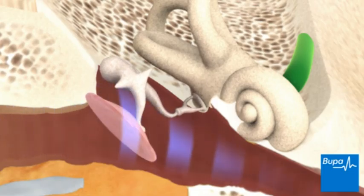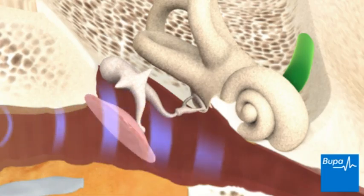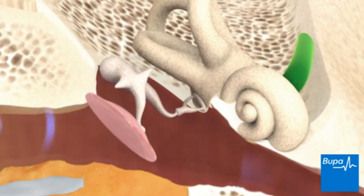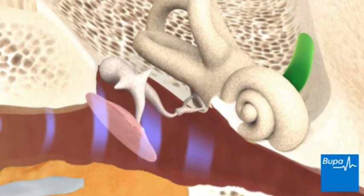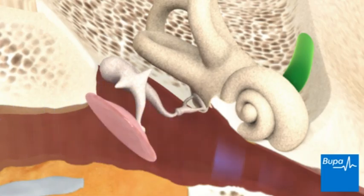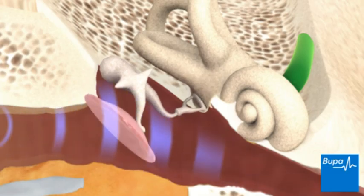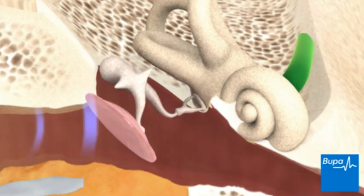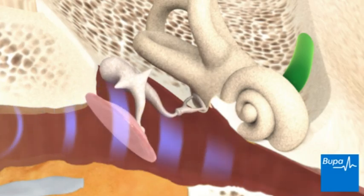The higher the pitch or frequency of the sound, the faster the eardrum will vibrate. These vibrations are then passed on to the middle ear.